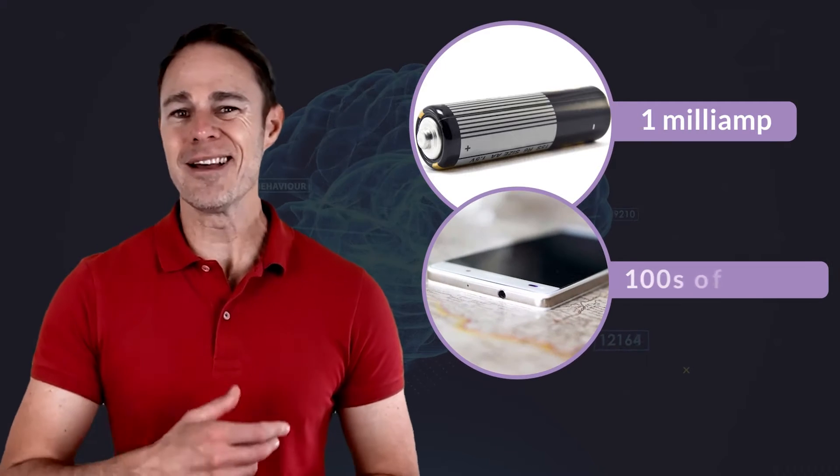So how much current are we talking about anyway? Well a double A battery packs about one milliamp, whereas your cell phone is powered by hundreds of milliamps. By comparison, your NeuroMyst Pro uses just one to four milliamps, so there is no risk of electrical shock.